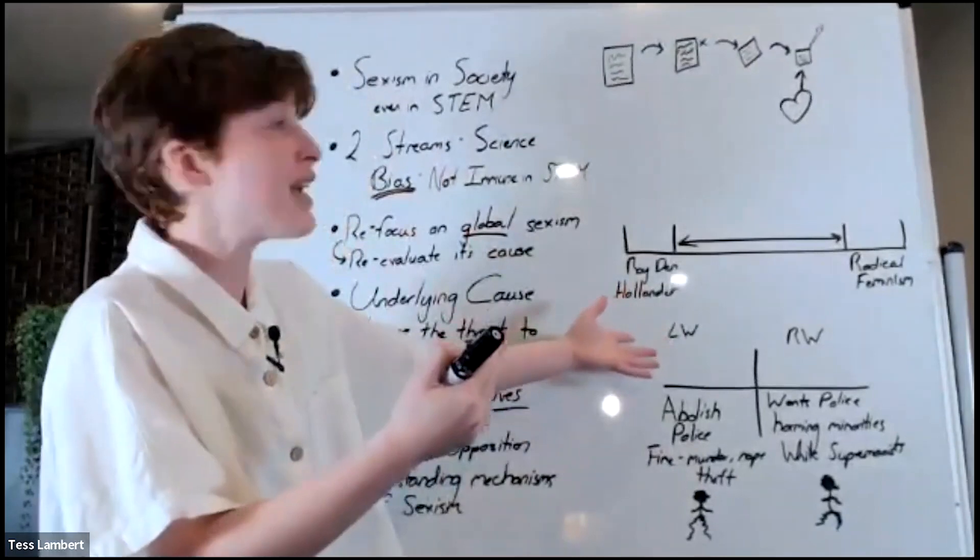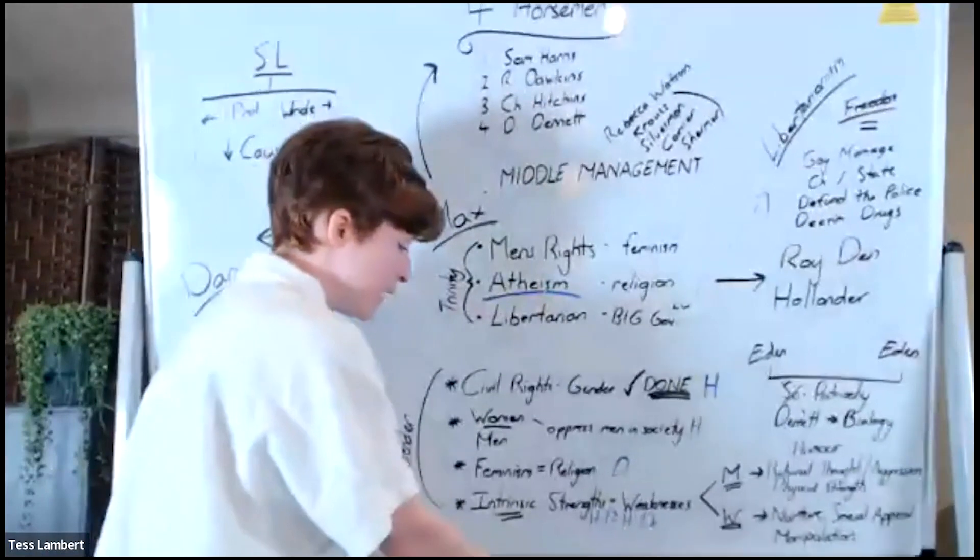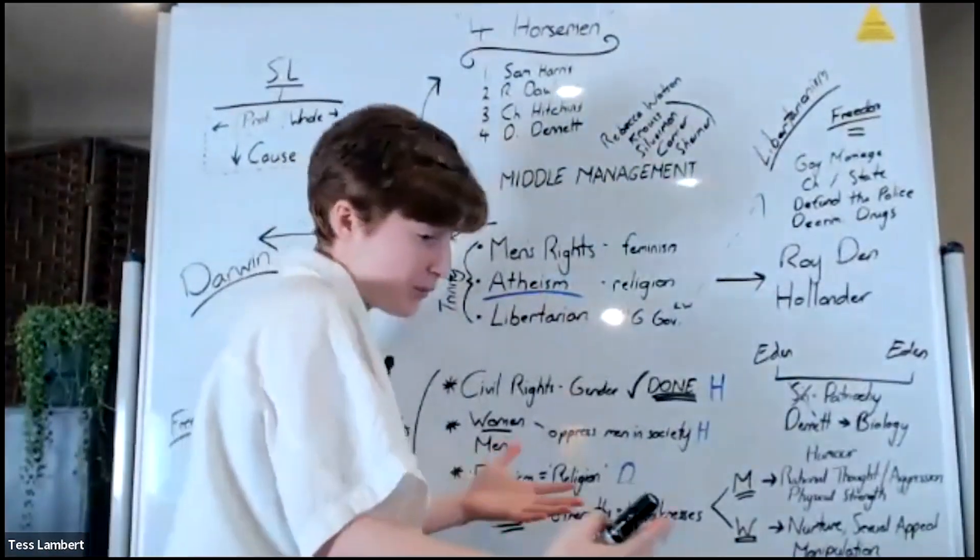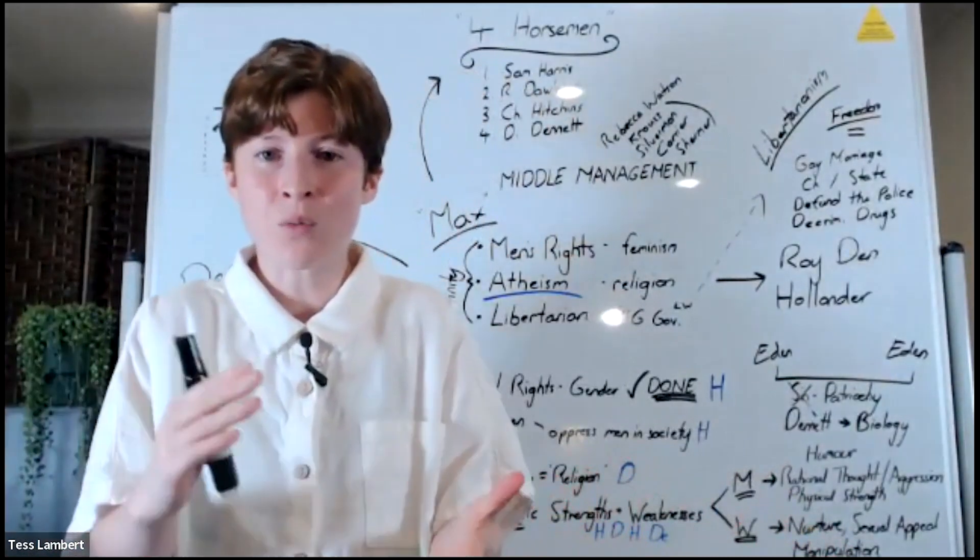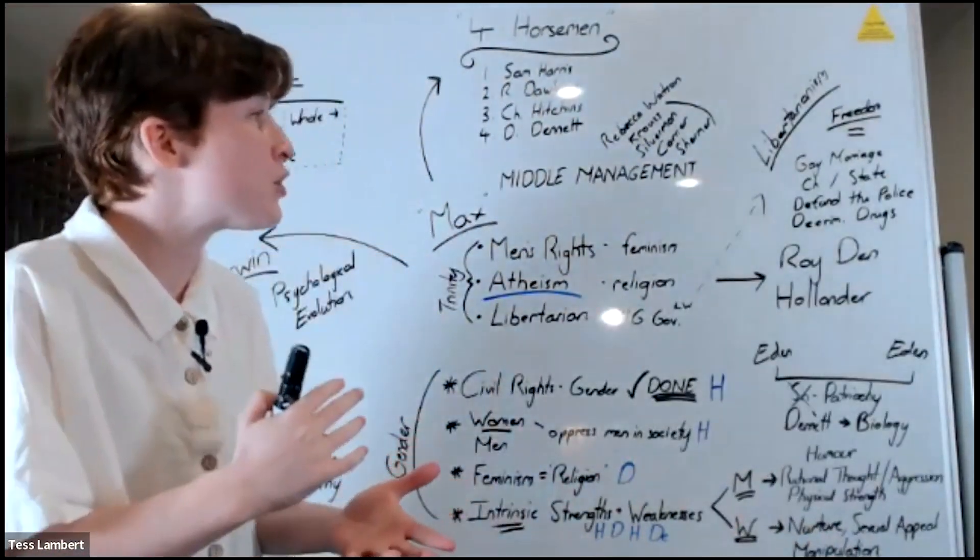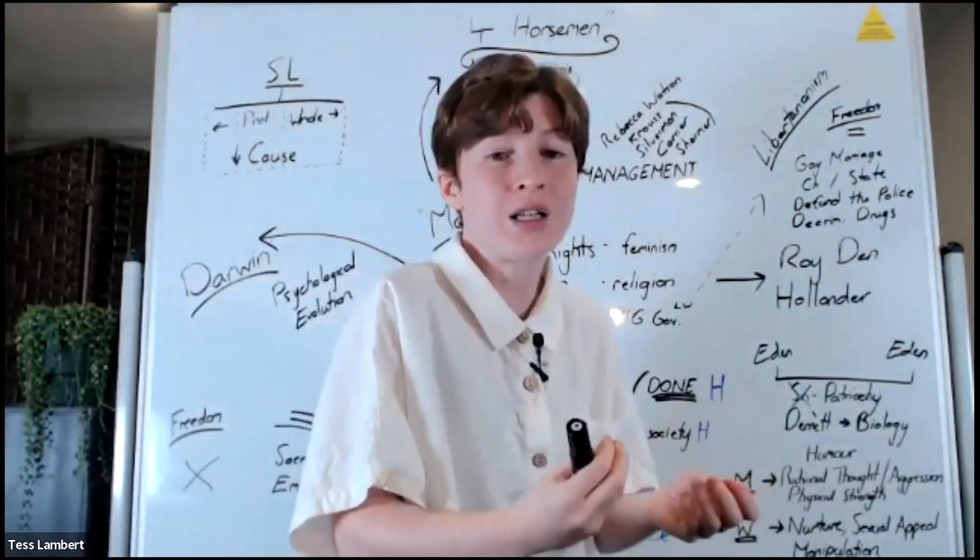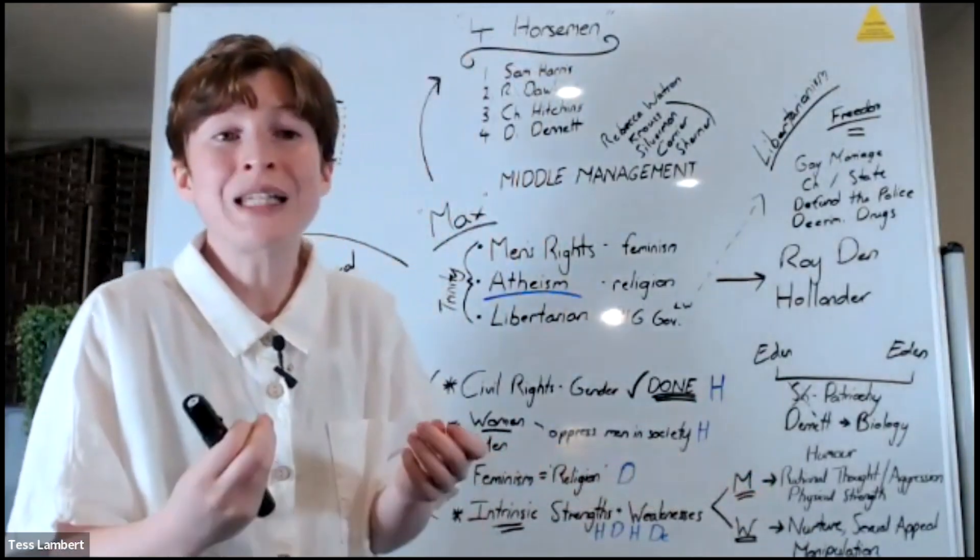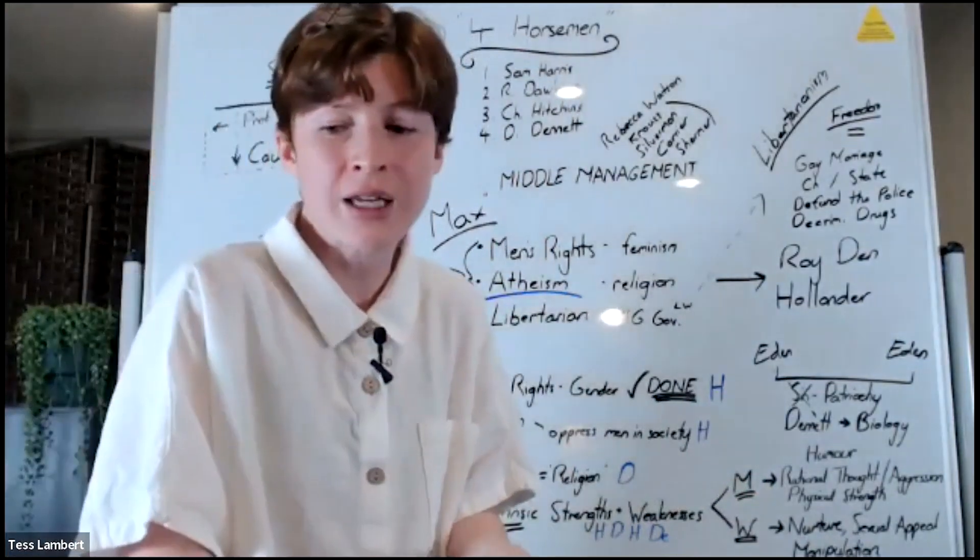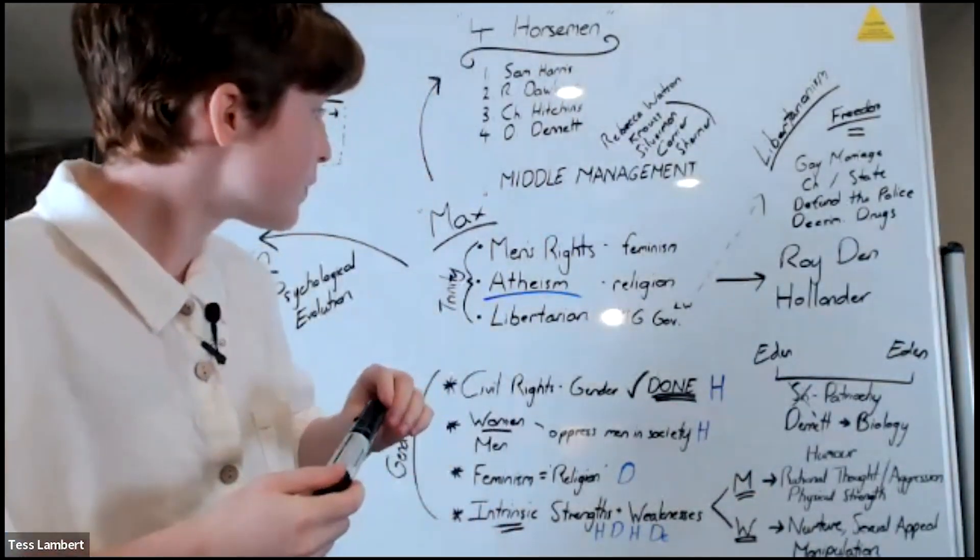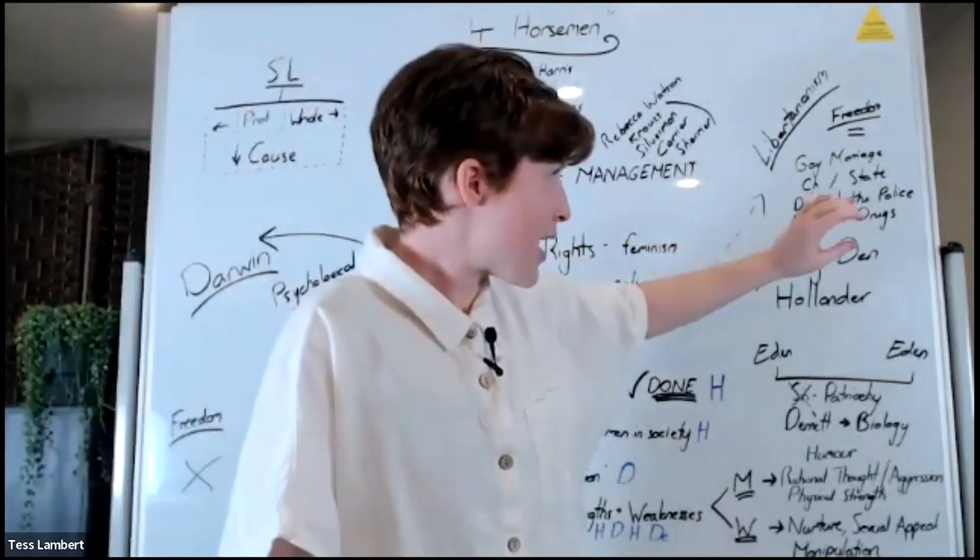And the reason that I wanted to go through this process is to not show you the Roy Dan Hollander, because it's easy to see, it's easy to condemn. I want you to show the rational and the reasonable, not because we can just condemn Dawkins or Hitchens, but so we can see that that is the spectrum on which we exist.